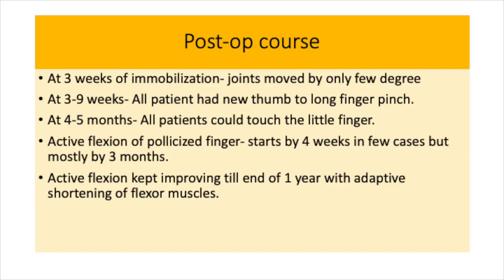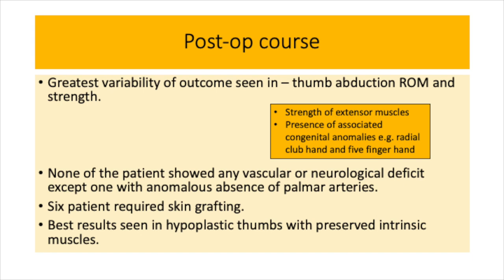For the postoperative course, after three weeks of immobilization joint movement was achieved by only a few degrees. At three to nine weeks all patients had a new thumb-to-long-finger pinch. At four to five months all patients could touch the little finger. Active flexion of the pollicized fingers started by four weeks in a few cases but mostly by three months, and continued improving until one year with adaptive shortening of the flexor muscles. The greatest variability in outcome was seen in thumb abduction range of motion and strength, depending on the strength of the extensor muscle transferred and the presence of associated anomalies like radial club hand. None of the patients showed vascular or neurological deficit except one with anomalous absence of the palmar artery, and six patients required skin grafting.